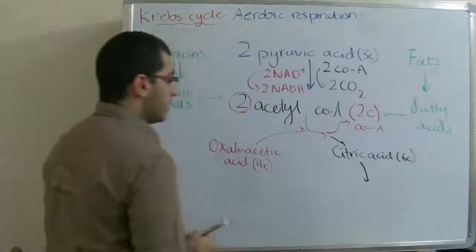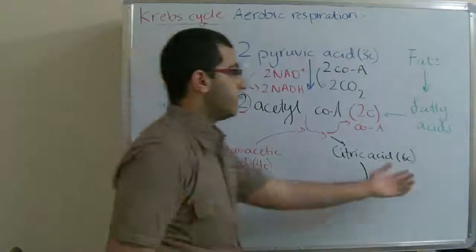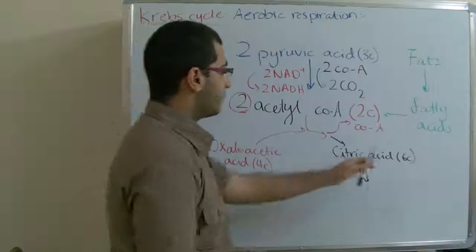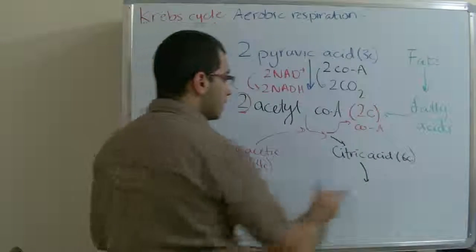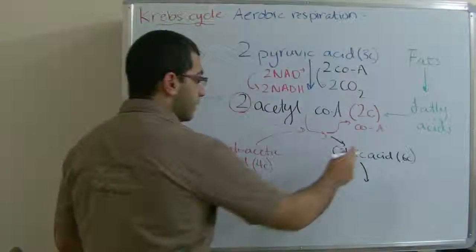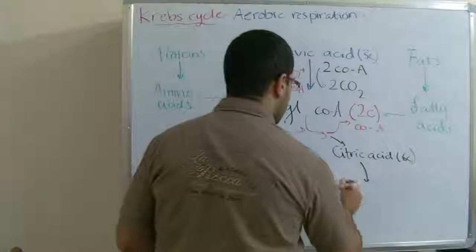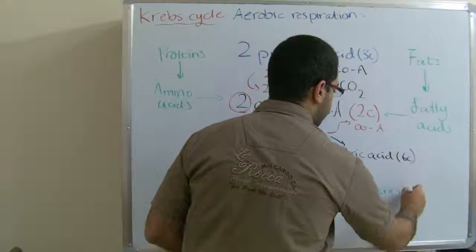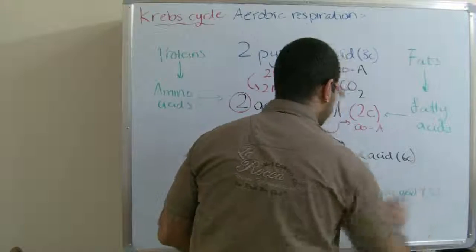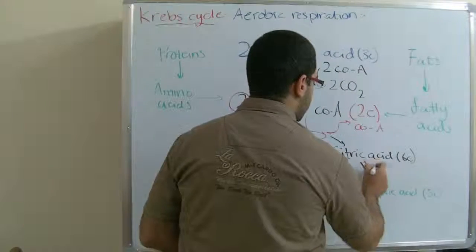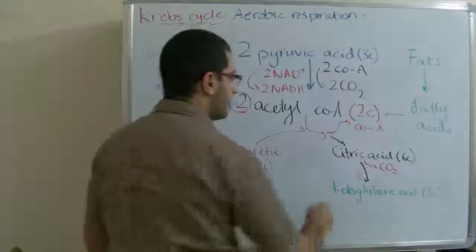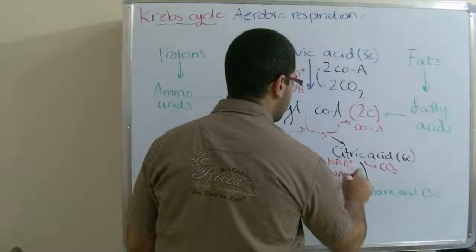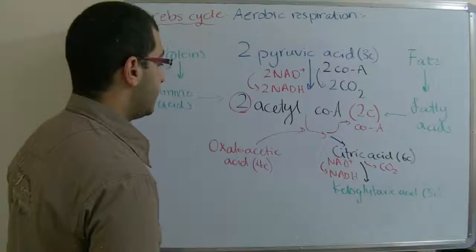Then this compound begins to lose its carbon content of atoms until it reaches to the fourth carbon by losing it to produce carbon dioxide. So the citric acid transforms into ketoglutaric acid with five carbon. We have here a carbon dioxide produced and NAD+ reduced into NADH, only one NAD+ reduced into one NADH.